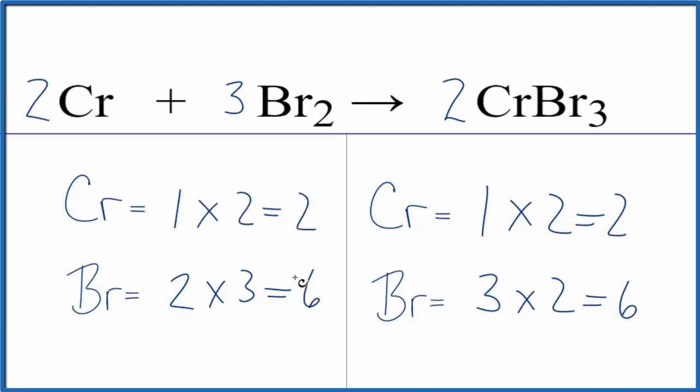This equation is balanced. The trick is, if you have this odd number here, it's often very helpful to multiply by two to get this to be an even number. After that, the balancing often just kind of falls into place.